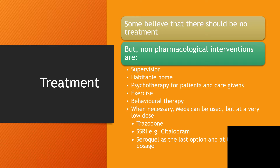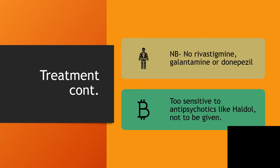When necessary, medication can be used but at a very low dose. Trazodone would be helpful to help sedate them if they need to sleep. Selective serotonin reuptake inhibitors like citalopram can be used at very low dosage and as a last option. They are too sensitive to antipsychotics like haloperidol, and those should not be given. That is why medication, when required, should only be at a very low dosage and as a last resort.